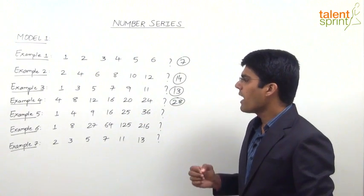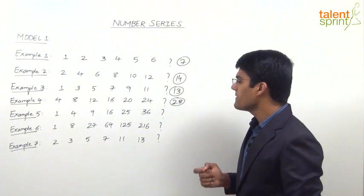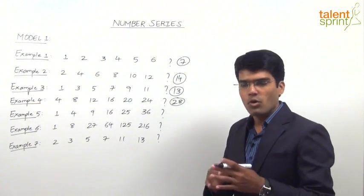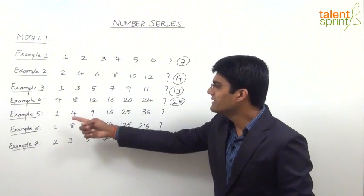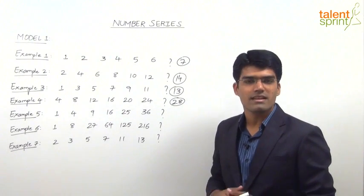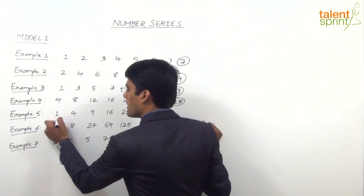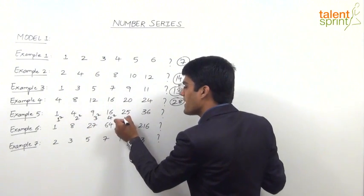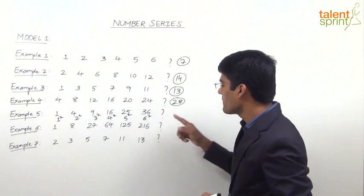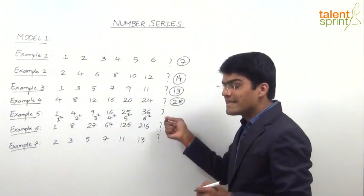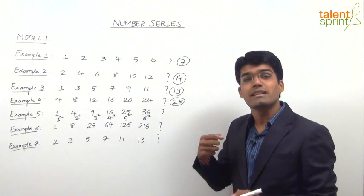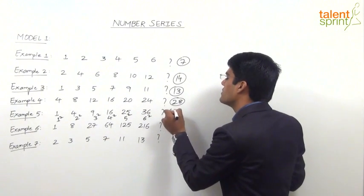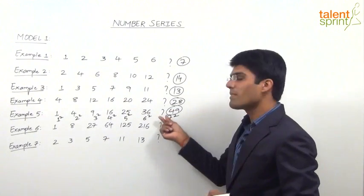The fifth example is 1, 4, 9, 16, 25, 36, and question mark. These are nothing but perfect squares of natural numbers starting from 1: 1², 2², 3², 4², 5², 6². As I've mentioned, we only need to understand the logic or rhythm of the series. So the next one has to be 7², which is 49. The question mark should be replaced with 49.